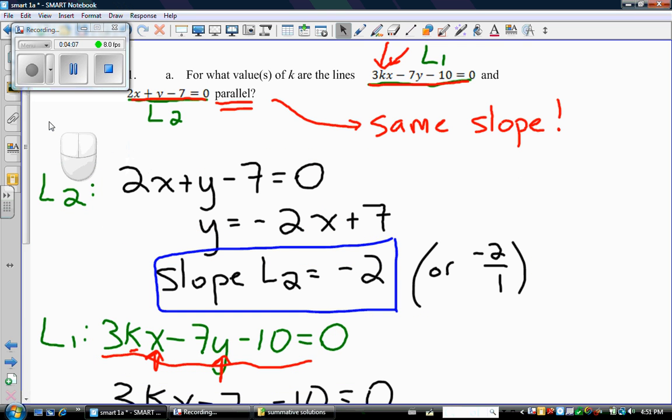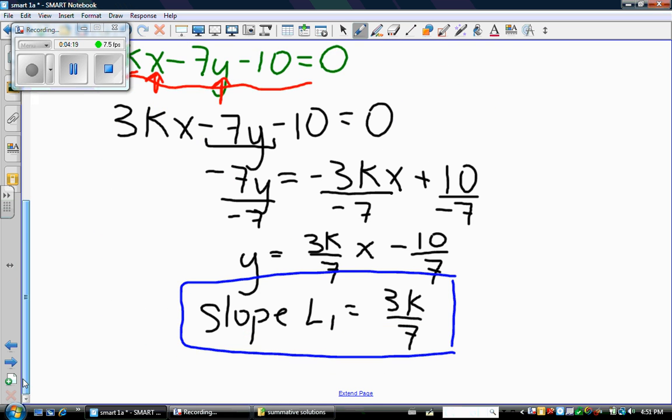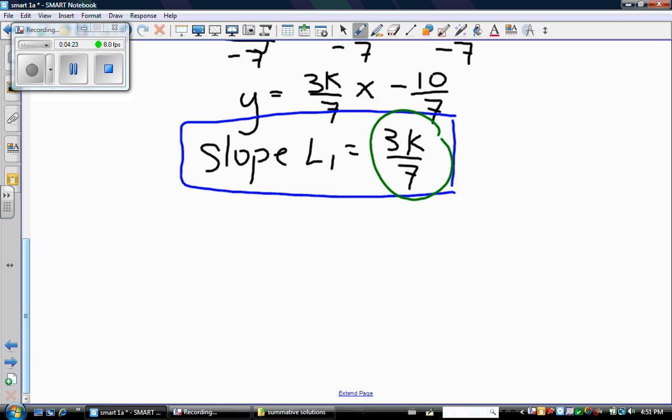Aha! We were looking for parallel lines. And that meant lines that have the same slope. One line has a slope of negative 2. The other line has a slope of 3k over 7. And if they're the same slope, then I can say that the slope of line 1 is equal to the slope of line 2.